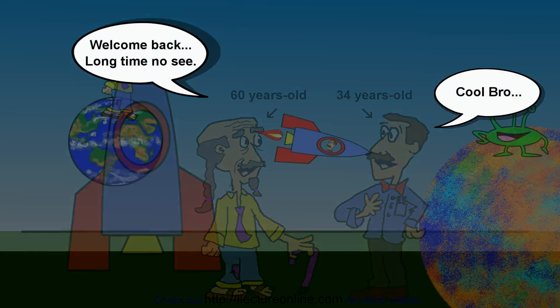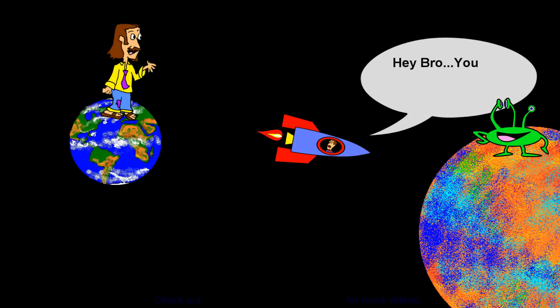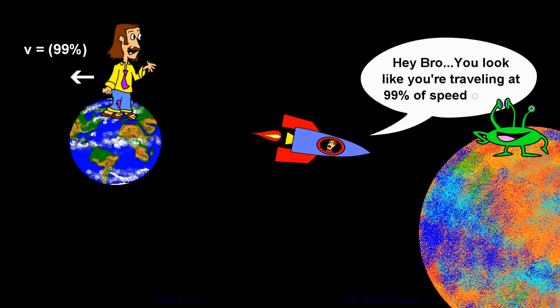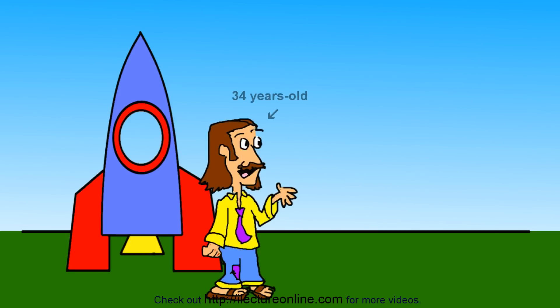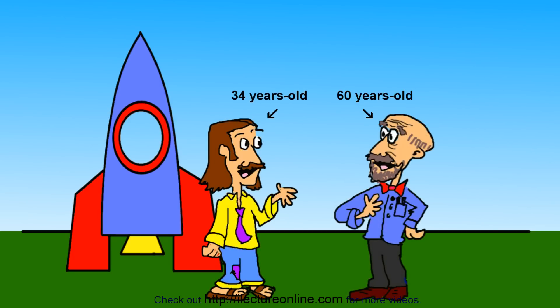Some people will say, well, relative to your twin in the spaceship, the Earth would have been moving away from the spaceship at 99% of the speed of light, which means that the twin thinks the twin on Earth should have aged only four years, and the twin in the spaceship should have aged 30 years. Hence, the twin paradox.